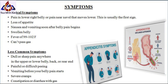The classic symptoms of appendicitis include pain in your lower right belly, or pain near your navel that moves lower — this is usually the first sign. Next: loss of appetite, nausea and vomiting soon after belly pain begins, swollen belly, and fever of 99 to 102 degrees Fahrenheit.